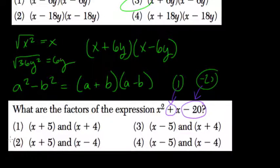Well, they're 5 and negative 4. Since 5 and negative 4, if you multiply them, you get negative 20 and add them and get positive 1.